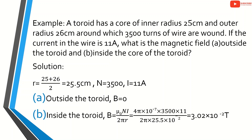Total number of turns N is 3500. Current i is 11 A. For sub-question A: what is the magnetic field outside the toroid? Outside the toroid, magnetic field is zero.